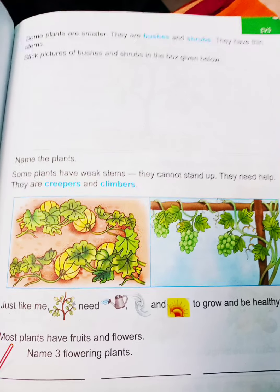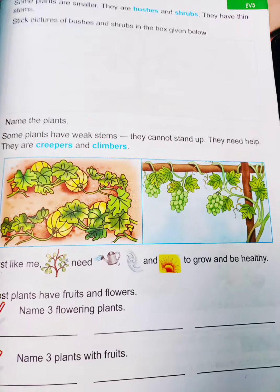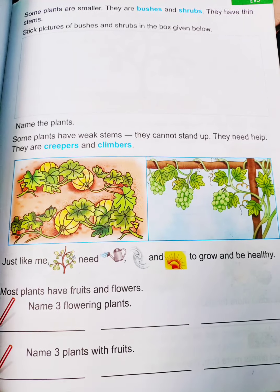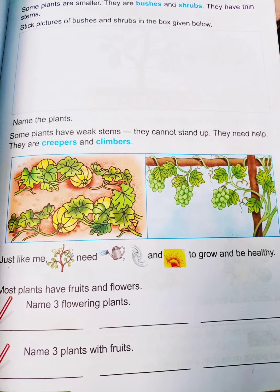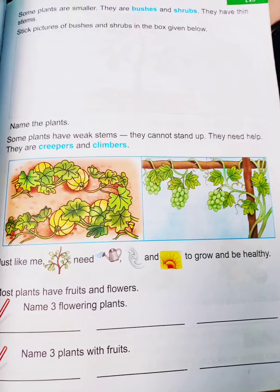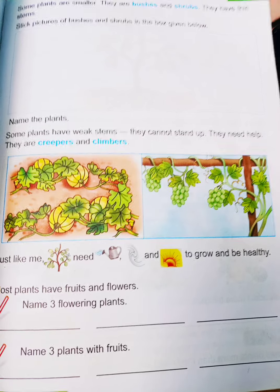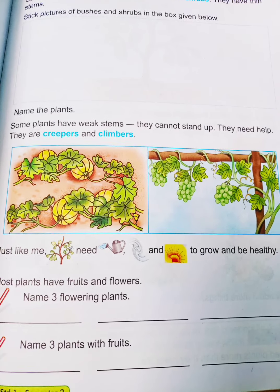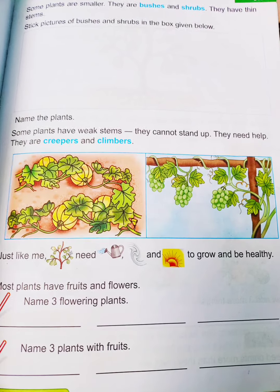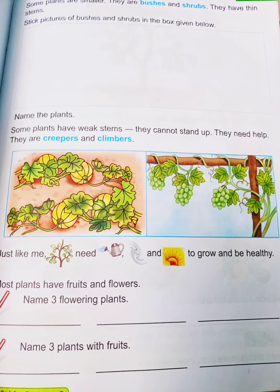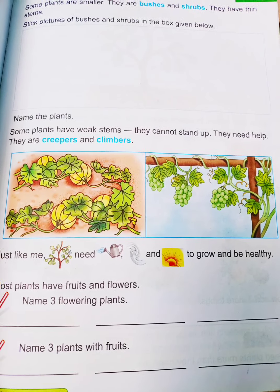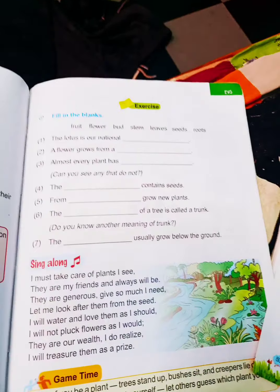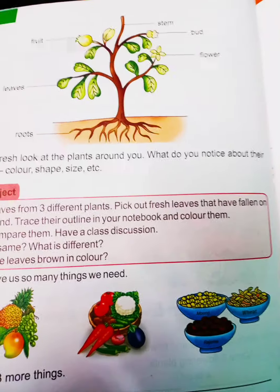Plants need water, sunlight, and air to grow and be healthy. Plants also need food to grow — they make their own food with the help of air, water, soil, and sunlight, as shown in the picture on page 125.